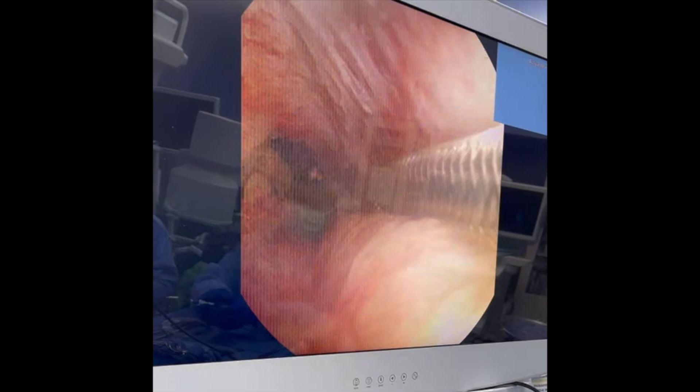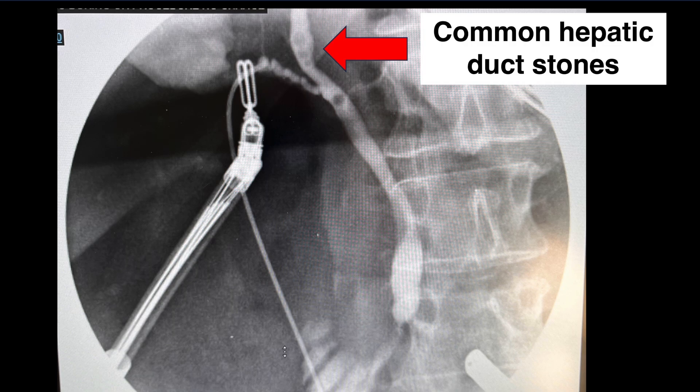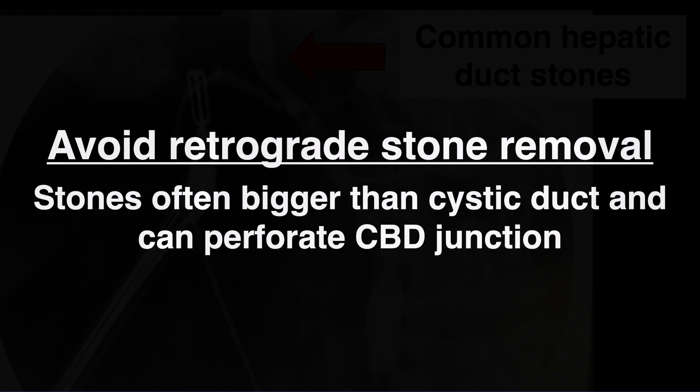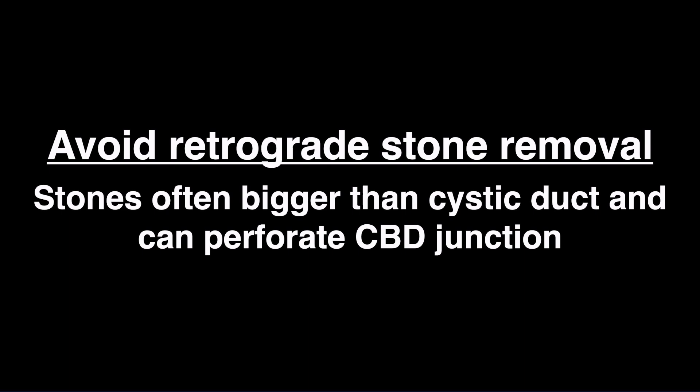The choledocoscope can serve two roles. First, it can confirm that the ducts are clear. And second, it can be used to snowplow stones forward, sometimes by just pushing the stone with the scope itself, or by grabbing it with the basket and emptying it into the duodenum. Rarely, we have used the choledocoscope to flip up into the common hepatic duct to grab stones with the basket, where we will still then push the stones forward into the duodenum and release. We avoid retrograde stone removal out of the cystic duct — i.e., pulling it back — as the stones are usually bigger than the cystic duct and therefore can perforate the common bile duct junction when trying to pull them out.